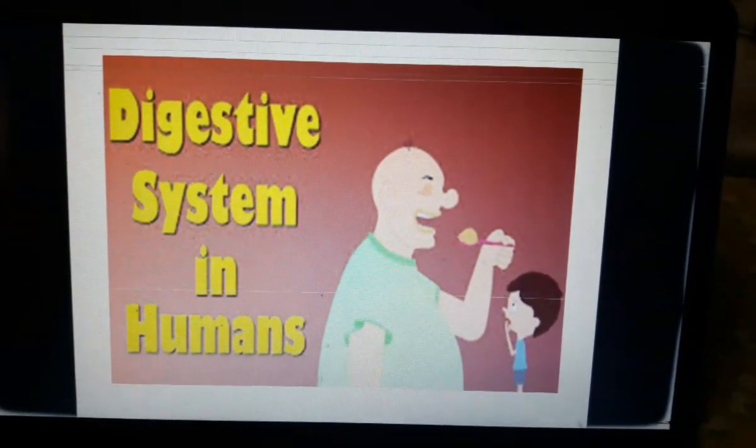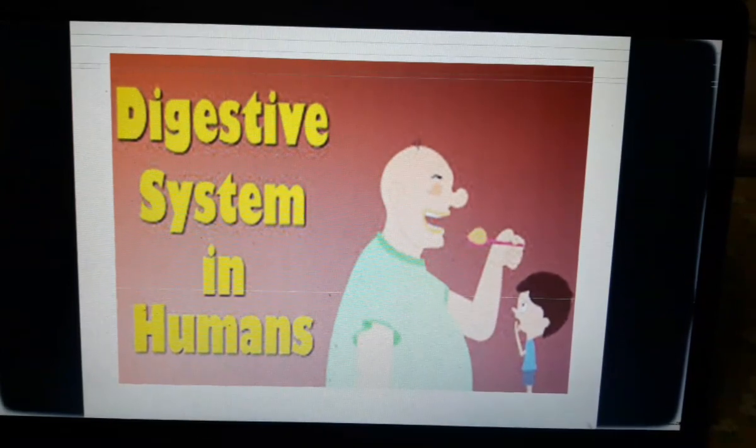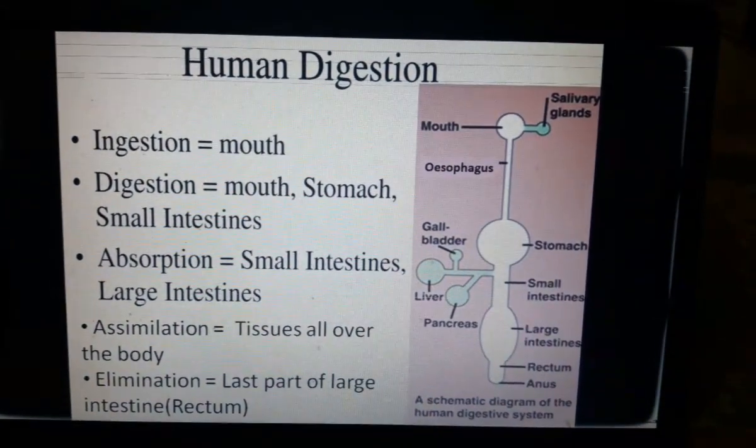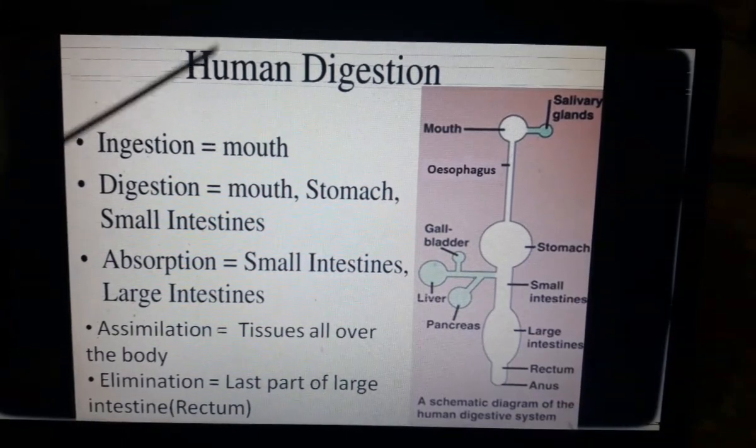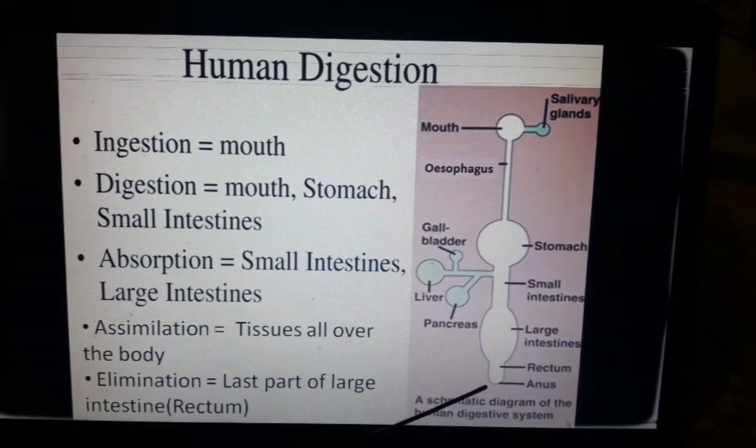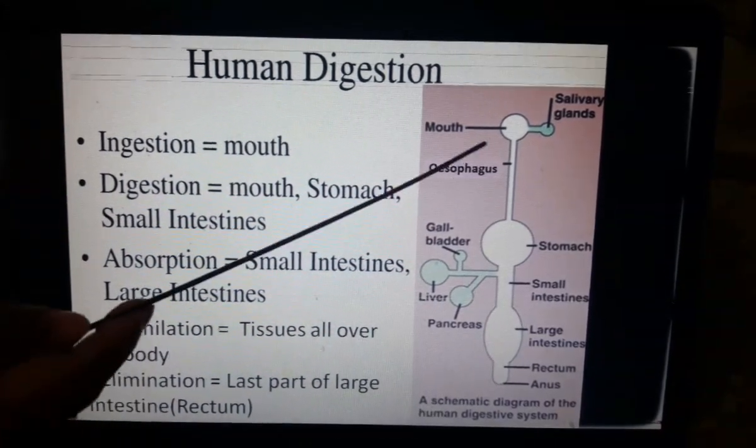To carry out this process, humans have a well-developed elementary canal. Here is a very simple diagram of the elementary canal. You can go through it. It starts from the mouth and ends with the anus. What are the other parts?